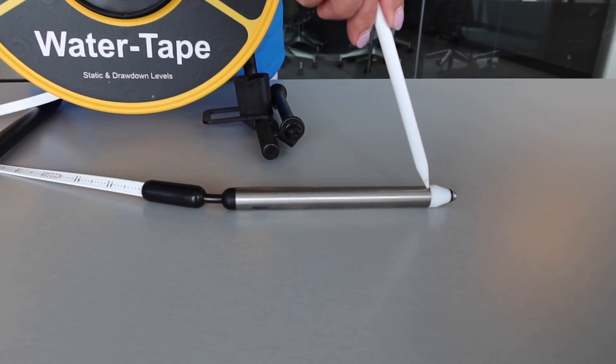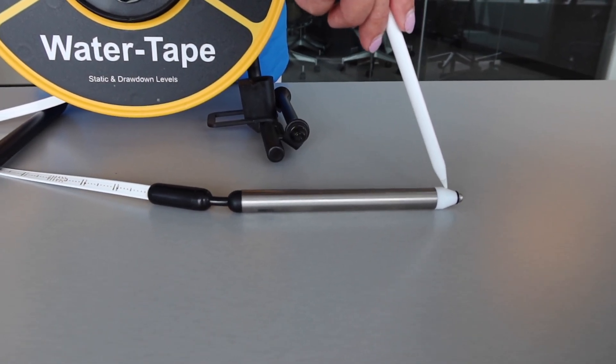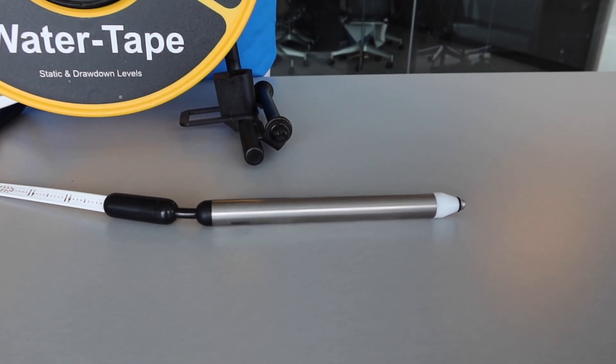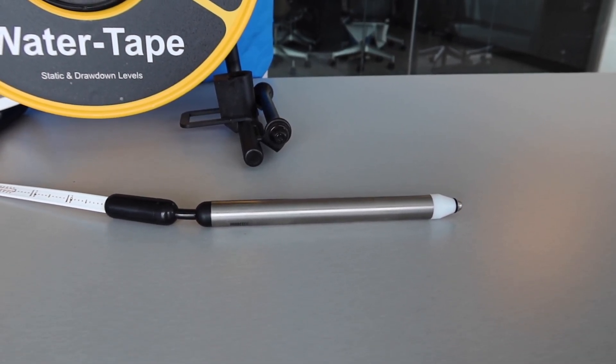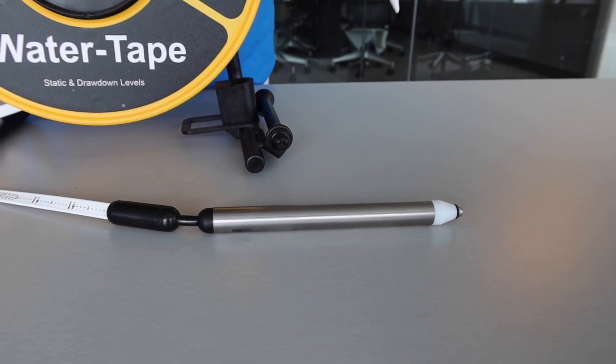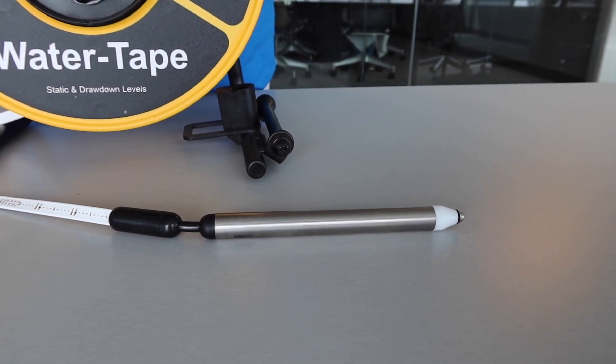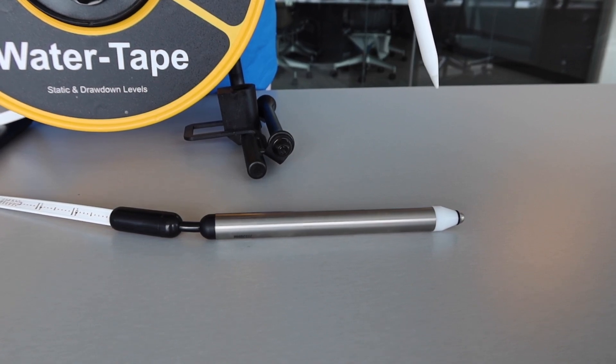Please note that you need to have both the stainless steel end as well as the start of the probe body submerged in the water. This creates complete contact with the circuit and activates the signal. The probe body is the start of the first foot or meter mark. The zero point starts here.